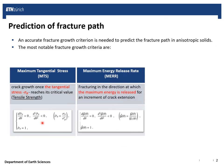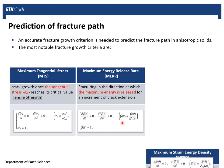The other criterion is the maximum energy release rate or MERR. According to this criterion, fracturing takes place along the direction at which the maximum energy is released for an increment of crack extension. The mathematical formulation states that once you find the maximum point of this normalized function, then you can determine the kink angle of fracture.